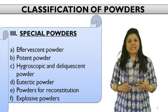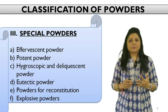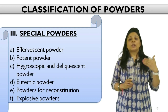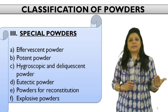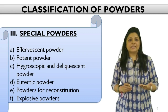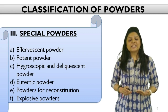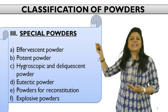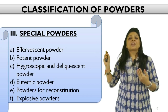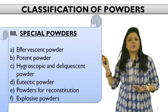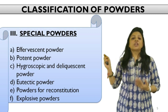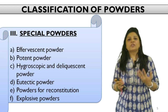The third category is based upon specific dispensing techniques required for such powders. They are known as special powders, which will not be supplied or dispensed in a conventional manner — additional care in dispensing is required. There are many such special types of powders, like effervescent powder, potent powder, hygroscopic and deliquescent powder, eutectic powder, powders for reconstitution, or explosive powder.